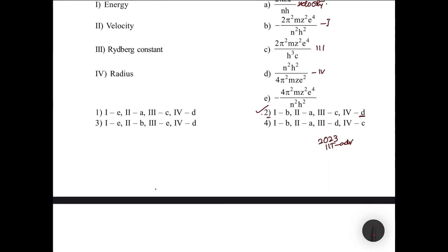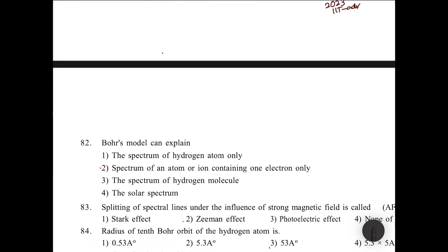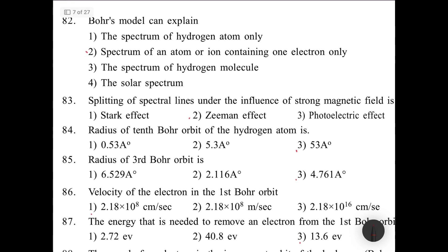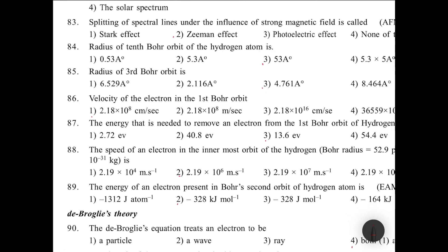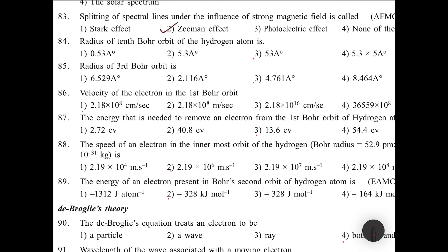Similar questions are coming in advanced examinations. Bohr model can explain spectrum of an atom or ion containing one electron only, like hydrogen, helium⁺, lithium²⁺, and beryllium³⁺. Only one electron systems, more than one electron not acceptable. Splitting of spectral lines under strong magnetic field is called Zeeman effect. Splitting under strong electric field is called Stark effect.